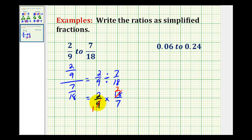So now we can determine the product. In the numerator, we have 2 times 2, that's 4. And our denominator would be 1 times 7, which is 7. So the ratio of 2/9 to 7/18, written as a simplified fraction, would be 4/7.